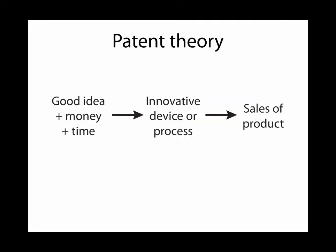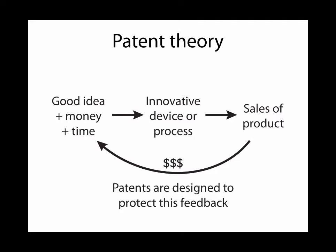Here's a cartoon that gives the justification for patents. You have a good idea, you invest money and time, and with that you produce an innovative device or process. The idea is the beginning, then you invest in it, and you would hope the innovative device or process turns into something of value that you can sell. So the idea becomes a device or process, and that device or process becomes something you can sell. The patent is designed to protect the feedback from sales back to the idea process — because if you had the idea, produced the innovative device or process, and then someone else could copy it, how would you be rewarded for the investment you made upfront?